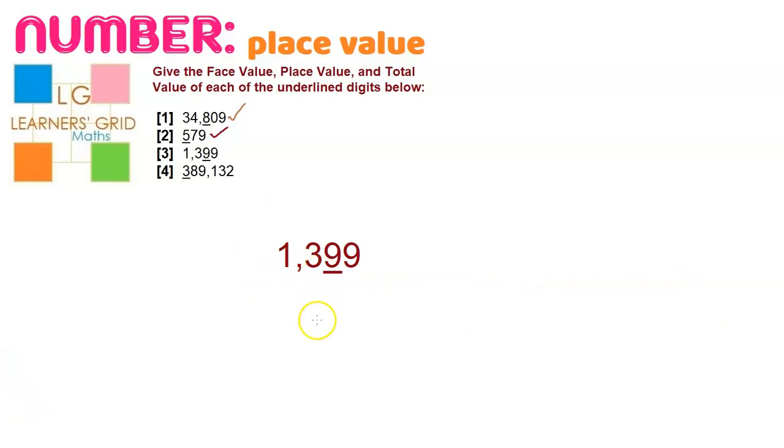For number three, we've got 1,399. Don't forget, this is the ones period here. This is the thousands period here. We've only got 1,000 there. But we're not focused on that. We are focused on the underlined digit. And the face value of the underlined digit is 9, because that's what it is. Just when you look at it, the place value is the, that's the ones place, that's the tens place, that's the hundreds place, so we're in the tens, which means the total value will be very easy to figure out, because the total value is the face value times the place value, so 9 times 10 is 90. All done.